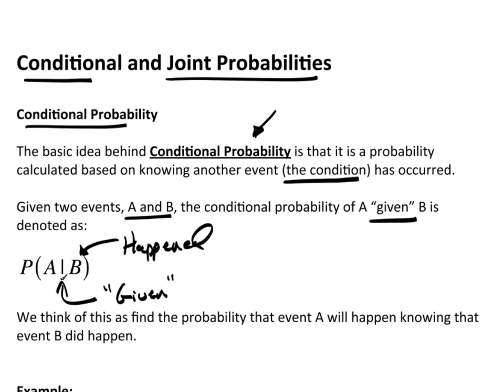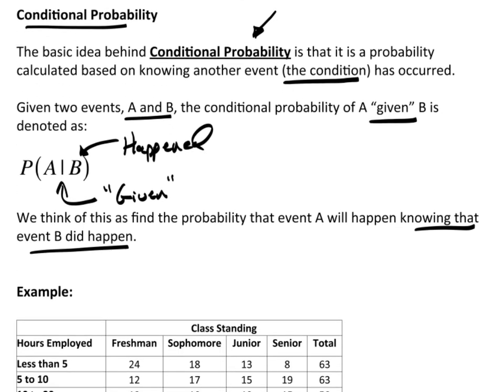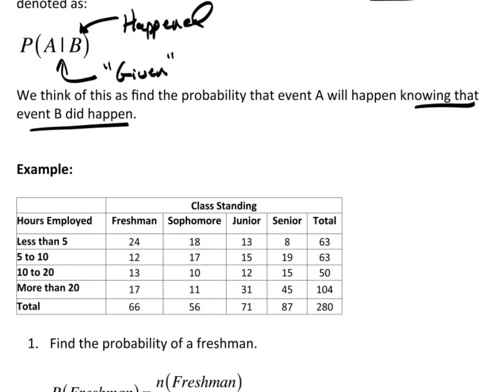What's the probability that A happened? We think of this as find the probability that the event A will happen, again knowing that B did happen. So we're conditioning on the fact that another event did in fact happen.